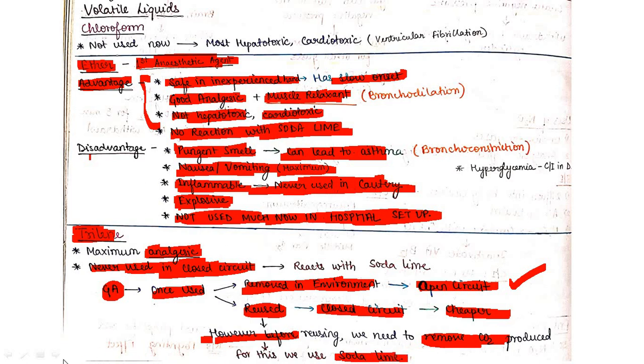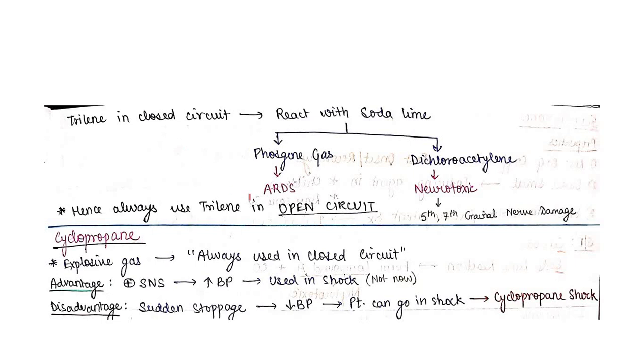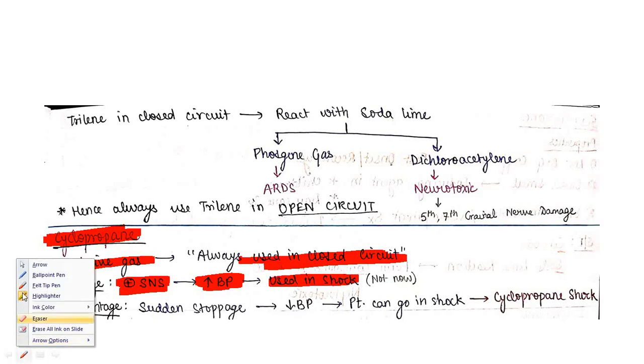Cyclopropane is explosive gas, always used in closed circuit. Advantage: it stimulates SNS, increases BP, so can be used in shock. But if you suddenly stop cyclopropane, there will be sudden fall in BP and patient can go into shock - that's known as cyclopropane shock.